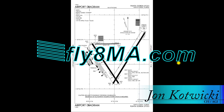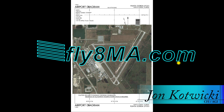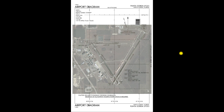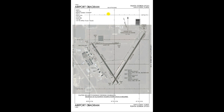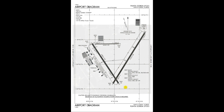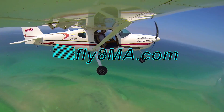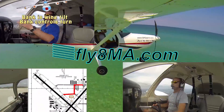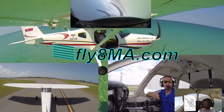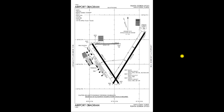Hey guys, John from FlyAtMikeAlpha.com, and today we're going to be going over airport diagrams. What exactly are they, how do we want to use them, and what does all this symbology mean? We're going to start off with a fairly basic airport diagram, using Punta Gorda Airport, KPGD in Punta Gorda, Florida, and we'll start from the top before we get into the meaty part.